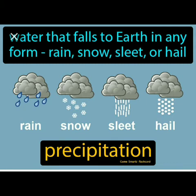The main forms of precipitation include the different forms in which water vapour comes to the earth's surface: drizzle, rain, sleet, snow, hail, and others.